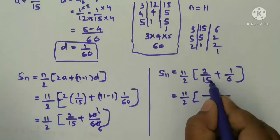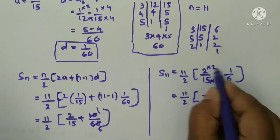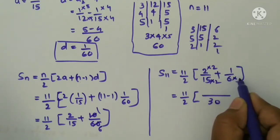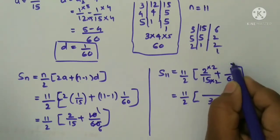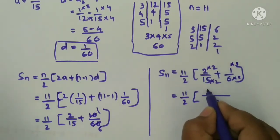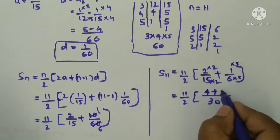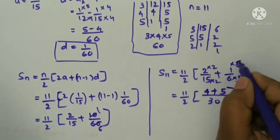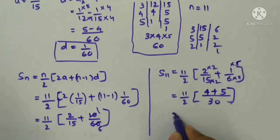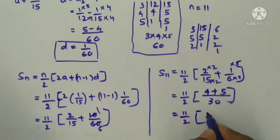So 30 is the LCM means here I should multiply 2 to get 30 and that 2 you should multiply to numerator. To 6 what you should multiply to get 30? 6, 5s are, that 5 you should multiply to numerator. 2, 2s are 4 plus 5, 1s are 5, this is 5. Now 4 plus 5, now 11 by 2 into 4 plus 5 how much you will get it, 9 by 30.